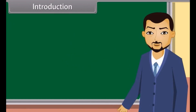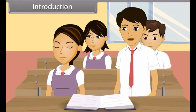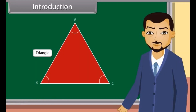Students, you must have studied about closed figures. What do we call the figure which is formed by three intersecting lines? A triangle, sir! Yes, you are right, Rahul, a triangle. It has three sides, three angles and three vertices. Today, I will tell you about the congruence of triangle and the properties of triangle.